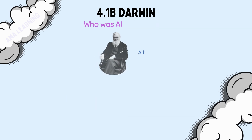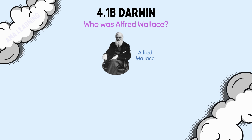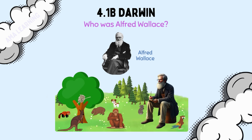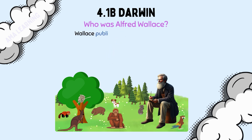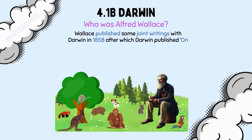Who was Alfred Wallace? Wallace independently developed similar ideas to Darwin while studying species in the Malay archipelago. He also proposed the theory of evolution by natural selection. He published some joint writings with Darwin in 1858, after which Darwin published On the Origin of Species the following year.